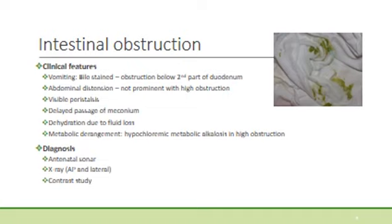Dehydration may occur, especially due to poor feeding and fluid loss. It is important to perform a blood gas and look for metabolic derangements. Hypochloraemic metabolic alkalosis can be expected in babies with a high obstruction due to the loss of stomach acid. This will be aggravated by the loss of chloride, and the compensatory mechanism in the kidney is to reabsorb bicarbonate instead of chloride.